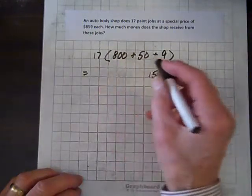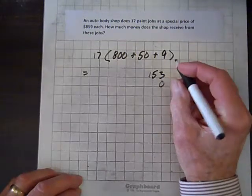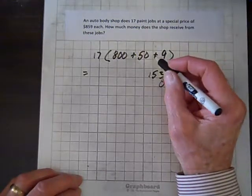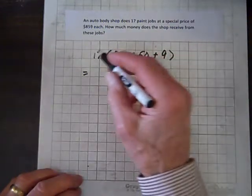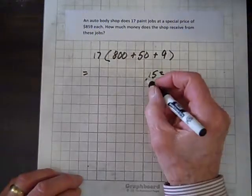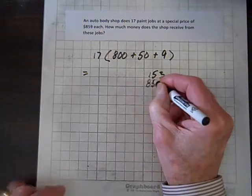Now, let's multiply 17 times 50. Well, I know 17 times 0 is 0, and 17 times 5. Well, 5 times 7 is 35, and 5 times 10 is 50. And the sum of those, 35 and 50, is 85. Oh boy, I'm running out of pen here.